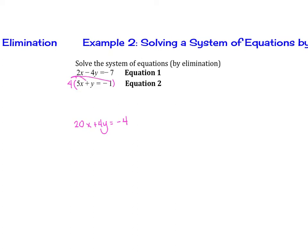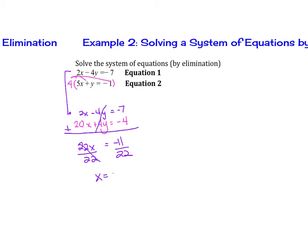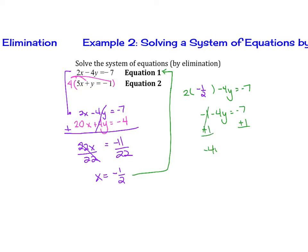Make sure you distribute to every single term. Rewrite equation 1 just as it is, then add the equations together — our y's cancel. We get 22x equals negative 11, divided by 22, so x equals negative 1 half. Now we find y by plugging back in. Equation 1 is nicer because there's a 2 there: 2 times negative 1 half minus 4y equals negative 7. That gives negative 1 minus 4y equals negative 7. Add 1 to both sides: negative 4y equals negative 6, divided by negative 4, so y equals 3 halves. The solution is (−1/2, 3/2).